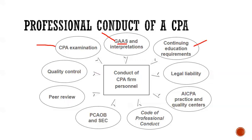When you become a CPA, you'll have to continue to gain education through what they call continuing professional education. After you get your CPA, you still have to take classes. Very important: there is legal liability. If you don't conduct yourself according to the way you're supposed to as a professional in accounting, you might face legal liability — for example, conducting an audit in a fraudulent manner. You might end up in jail or at least have some kind of penalties to pay. The AICPA, the American Institute of Public Accountants, has practice and quality centers that help you know how you're supposed to conduct yourself.